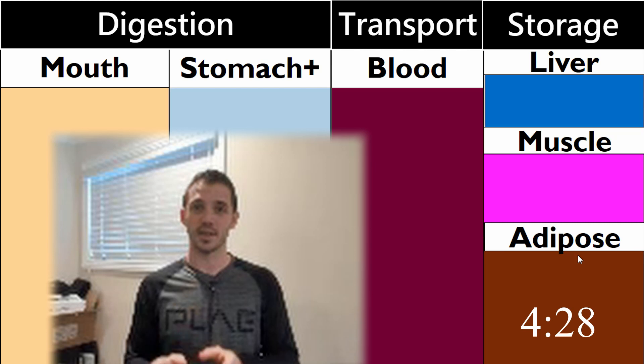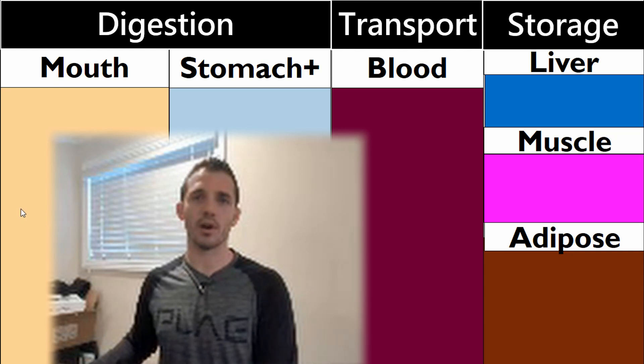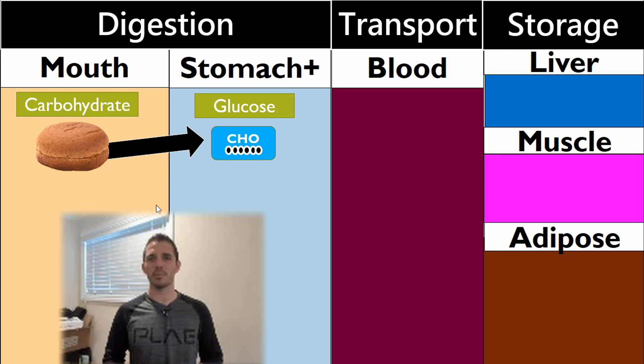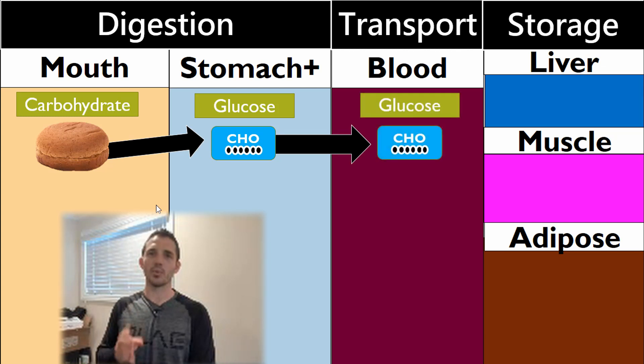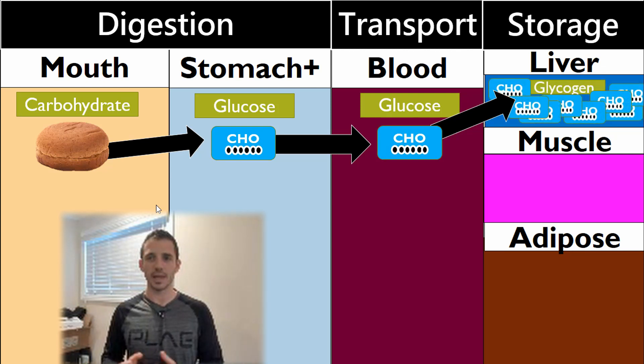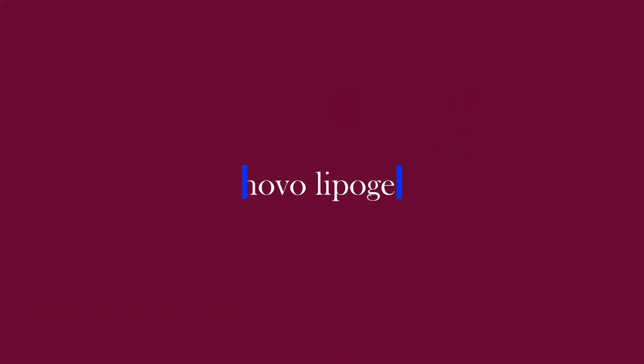When you ingest food, it starts in your mouth. Let's assume we're talking about carbohydrate to start. By the time it leaves your stomach, it's no longer a carbohydrate - it's now in the form of glucose, a six-carbon molecule. When it leaves your stomach, it enters your blood also as glucose. You'll store glucose in one of three places: in the liver as glycogen, in the muscle as muscle glycogen, or a little bit will be stored as adipose tissue through de novo lipogenesis.